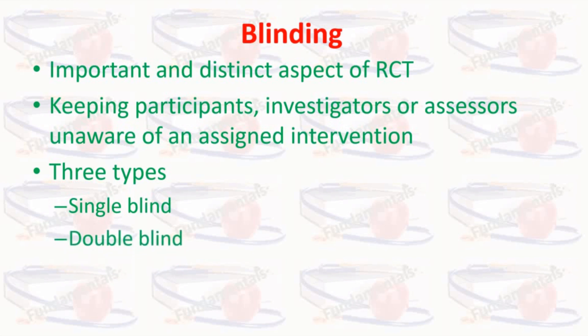Double Blind: here neither the investigator, i.e. the doctor, nor the participant, i.e. the patient, knows the group allocation and treatment received. However, the statistician knows it. The drug is coded before handing over to the doctor. Usually, this trial is in practice.